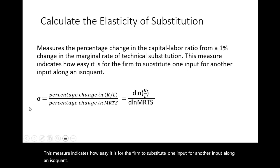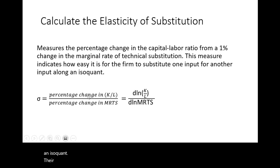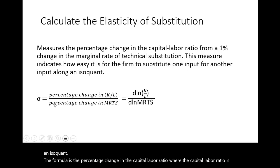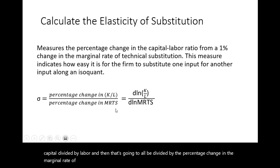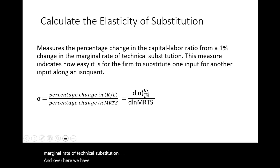The formula is the percentage change in the capital labor ratio, where the capital labor ratio is capital divided by labor, and then that's going to all be divided by the percentage change in the marginal rate of technical substitution. Over here we have the change in the natural log of the capital labor ratio, and the change in the natural log of anything will represent a percentage change.